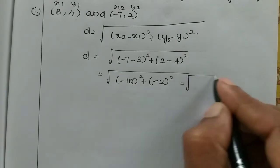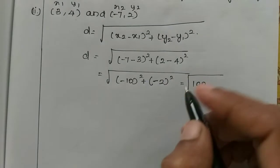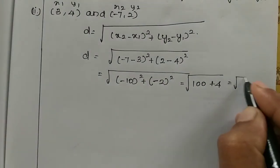So which is equal to root of 10 square is 100. Square is equal to minus plus 4. Okay. So 2 square is 4 which is equal to root of 104.